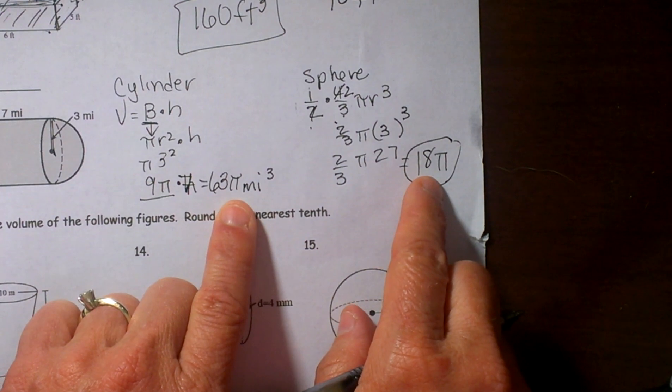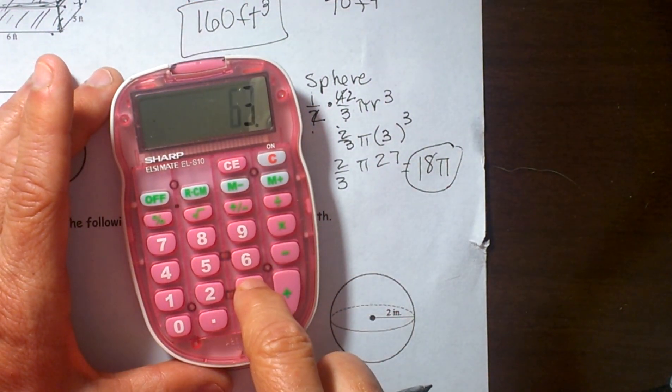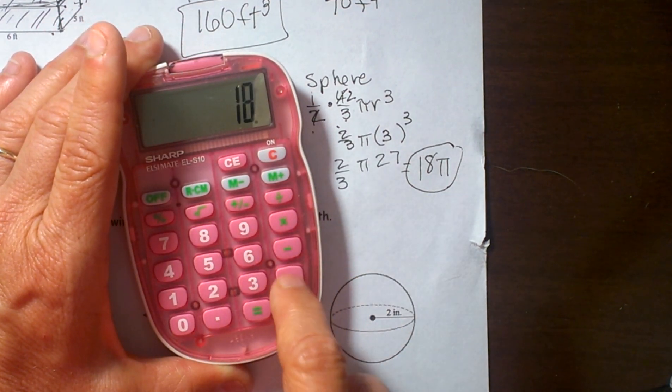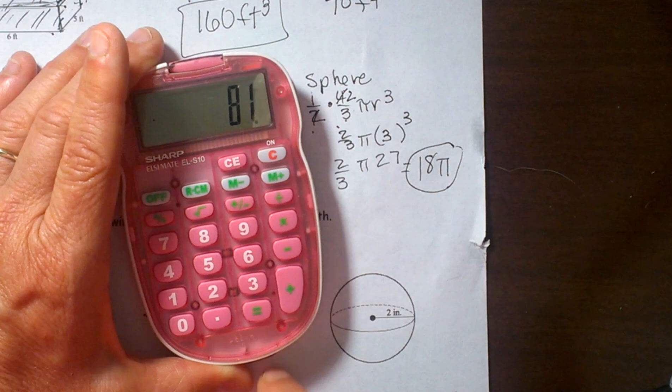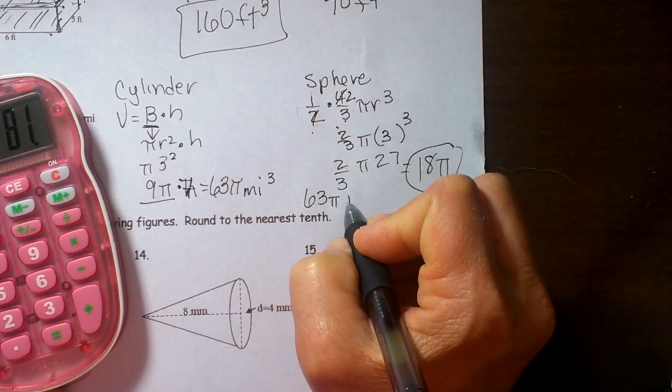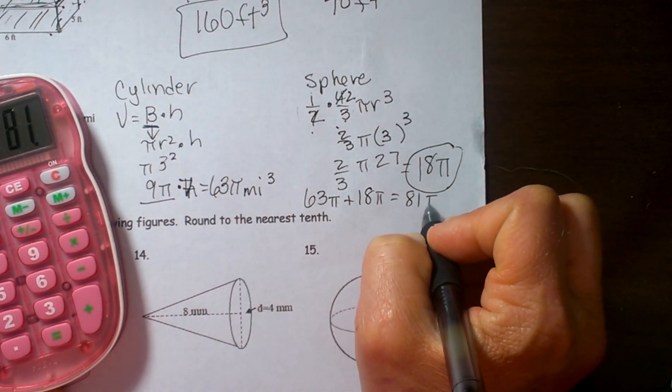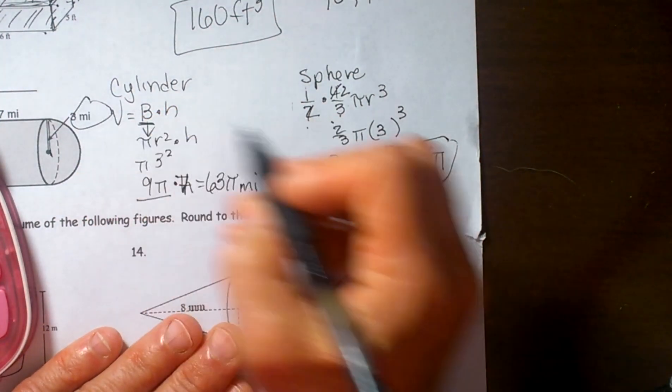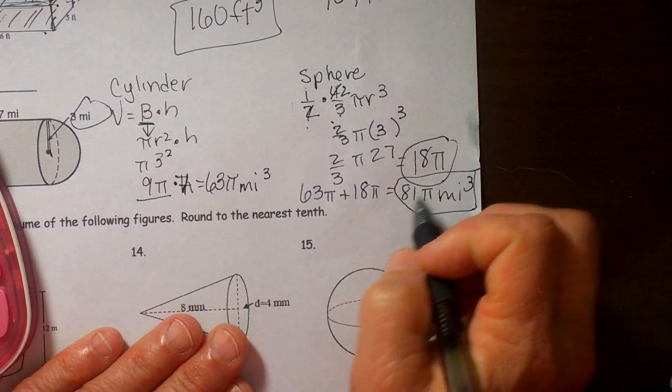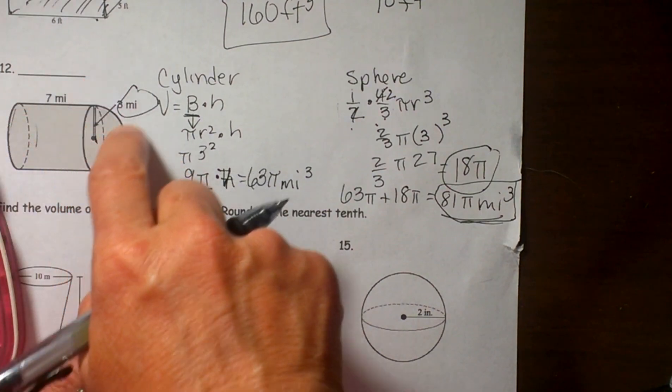Now it is a composite figure so we are just going to add these together. So 18 pi plus 63 is 81. So the volume of 63 pi plus 18 pi is 81 pi. And let's add our units, miles and its volume so it is cubed. And that is how you find the volume of this composite figure with a cylinder and a hemisphere.